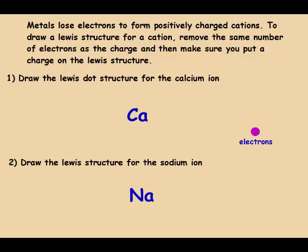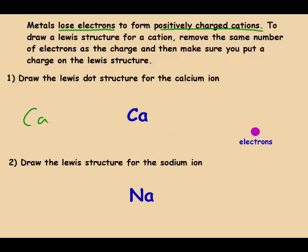Metals tend to lose electrons to form positively charged cations. To draw a Lewis structure for a cation, you remove the same number of electrons as the charge, and make sure you put the charge on the Lewis structure. For instance, calcium starts with two valence electrons, but we know calcium gets a plus two charge, so we lose two electrons. Therefore, calcium ion's Lewis dot structure is just Ca with a plus two charge.